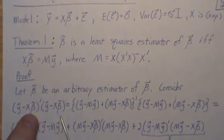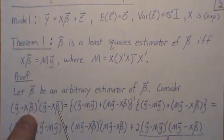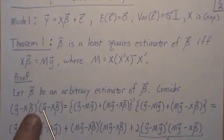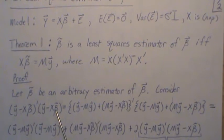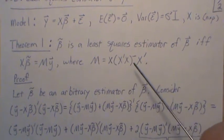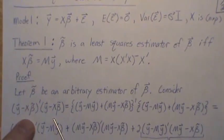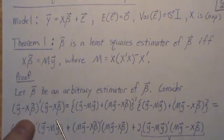And what we do is we change beta tilde, we move it around, calculate this, move it around, calculate it. And we keep doing that until we find the beta tilde that produces the absolute minimum sum of squared errors. And that's the least squares estimator.